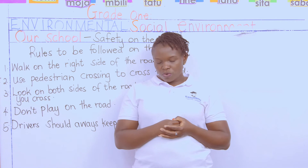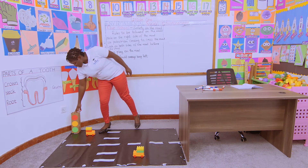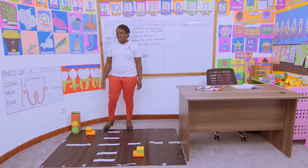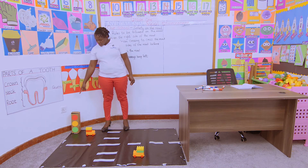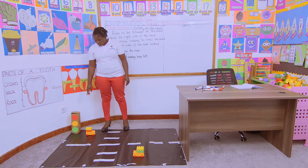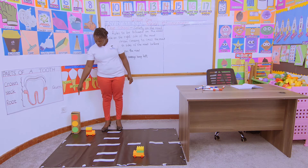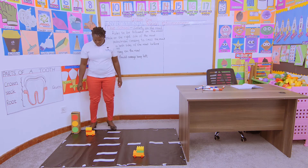Sometimes there will be no police officer to tell you when to cross. That is when we start using the traffic light. Our traffic light here — can you see it? It shows red. If the light is red, what does it mean? It means all vehicles are stopping.